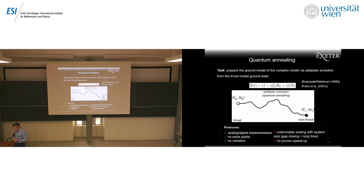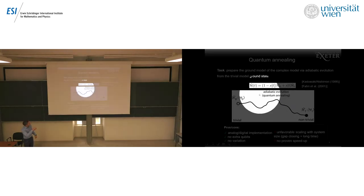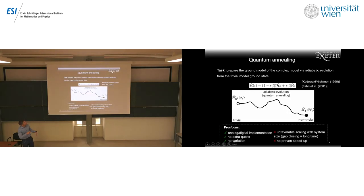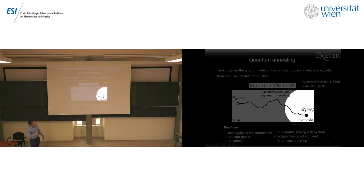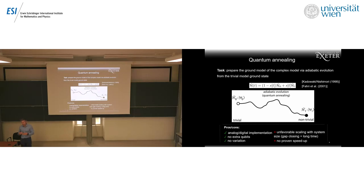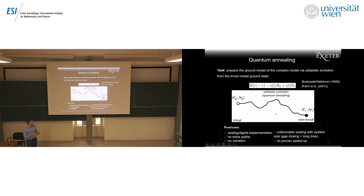If we speak about variational algorithms, we should also relate them to quantum annealing or adiabatic quantum computing. We start with some trivial ground state psi zero and go adiabatically to the ground state of a non-trivial Hamiltonian H1. This operates in continuous time — no digital errors, no extra qubits, no variation — so at some point we will reach the ground state. However, the scaling with gap size is very unfavorable: if there is a first-order phase transition in the middle, we might take exponentially long time to reach the ground state, and there is no proven speedup in general.